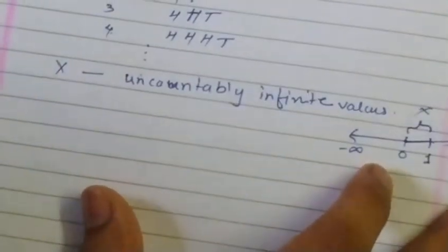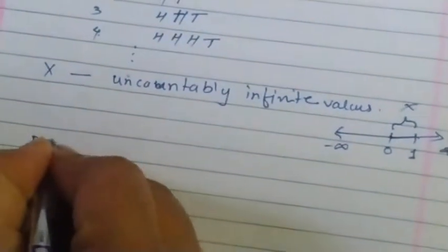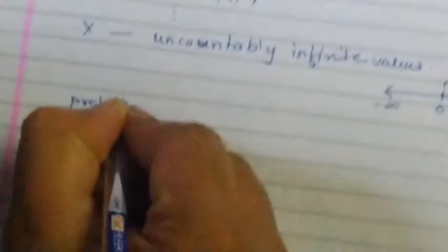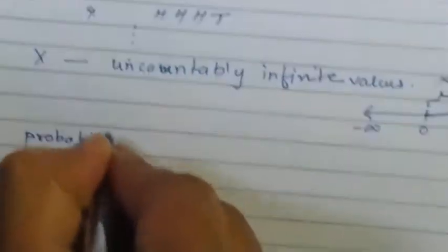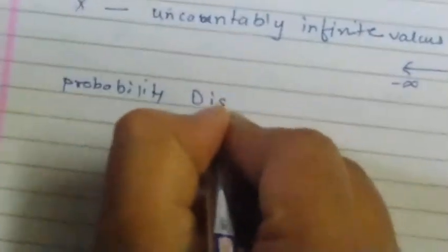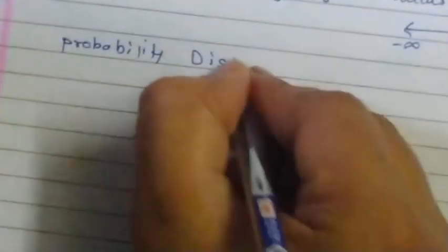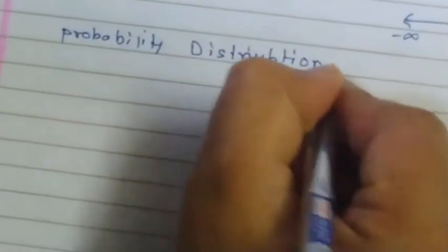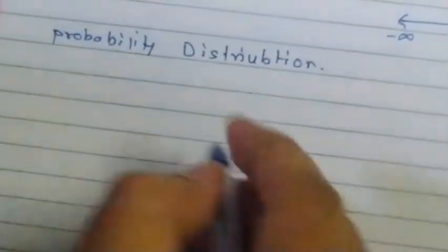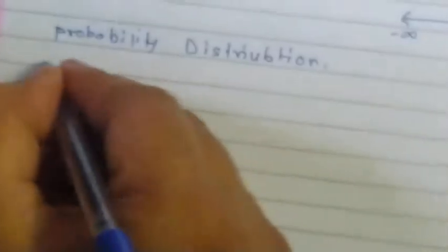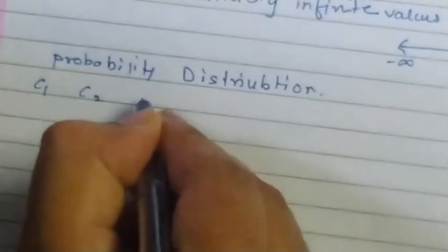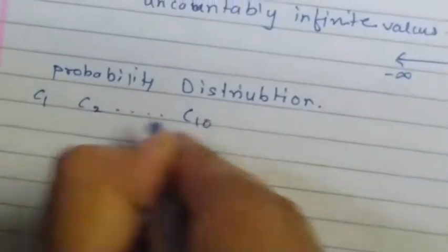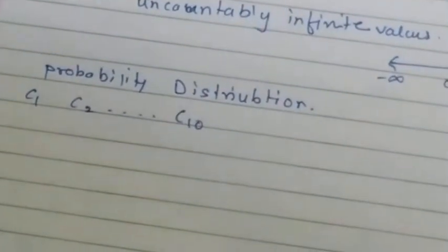Now we will move to probability distribution. Before I define it formally, I would like to discuss one simple example for clear understanding. I have 10 cards: C1, C2, C3 up to C10.